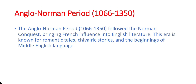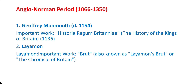Moving forward, we enter the Anglo-Norman period from 1066 to 1350. This era followed the Norman Conquest of England, bringing significant changes to the language and literature. The introduction of French influence led to the creation of works like The Song of Roland. The literature of this time began to reflect a more chivalric tone, with a focus on courtly love and the deeds of knights. Important writers: Geoffrey of Monmouth — Historia Regum Britanniae (The History of the Kings of Britain, 1136); Layamon — Brut.